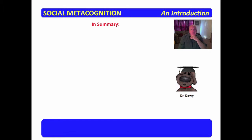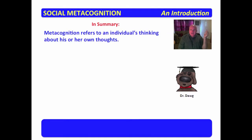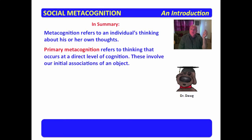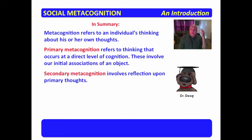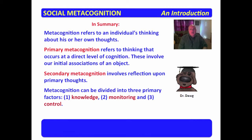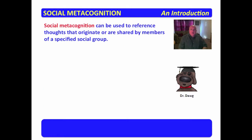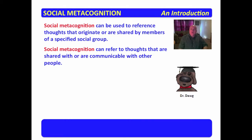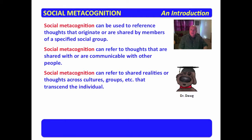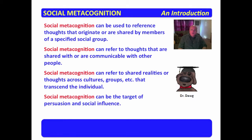In summary, metacognition refers to an individual's thinking about his or her own thoughts. Primary metacognition refers to thinking that occurs at a direct level of cognition — our initial associations of an object. Secondary metacognition involves reflection upon primary thoughts. Metacognition can be divided into three primary factors: knowledge, monitoring, and control. Social metacognition can reference thoughts that originate or are shared by members of a specified social group, thoughts that are communicable with other people, shared realities across cultures and groups that transcend the individual, and it can be the target of persuasion and social influence.